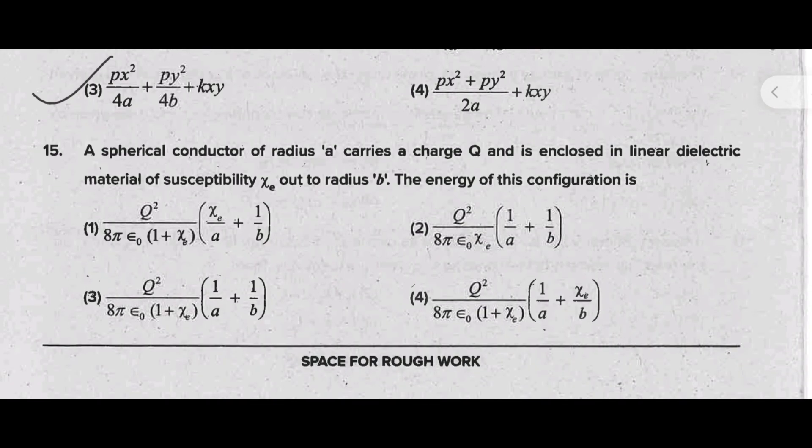A spherical conductor of radius A carries a charge Q and is enclosed in linear dielectric material of susceptibility χ_E out to radius B. The energy of this configuration is - the correct answer is option 4.